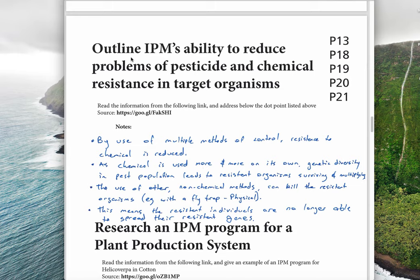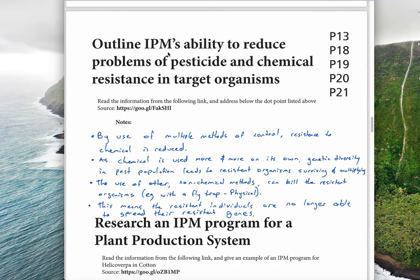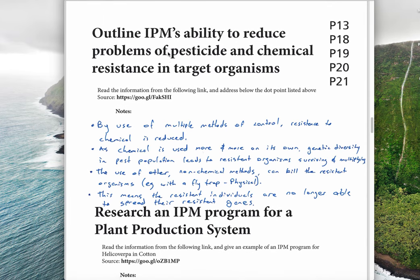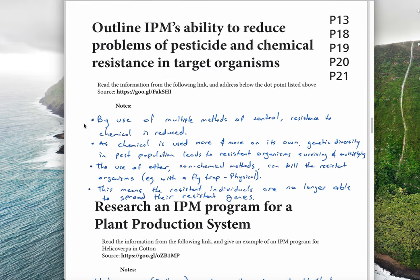Outline IPM's ability to reduce problems of pesticide and chemical resistance. Because we're using multiple methods of control, resistance to chemical is reduced. When you spray chemical on pests, most of them die, but some of them in the population have a natural resistance and they will survive. That means those ones that survive pass on their genes and more and more in the resulting population are resistant.